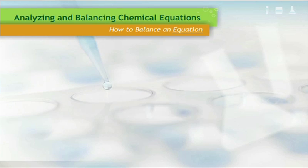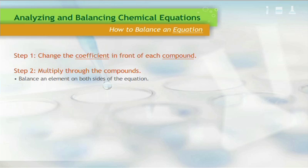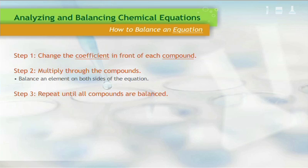To balance an equation, change the coefficients in front of each compound. Then multiply through the compound to make each element equal on both sides of the equation. Repeat until all compounds are balanced. This may take a few tries.